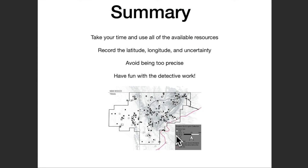To summarize, Geolocate is a great tool for turning words into georeferenced points, but it will be most effective if we take our time and use all the available resources. Remember to record not only the latitude and longitude, but also the uncertainty radius. Do try to avoid being too precise, as we would not want to introduce errors in our data analysis. Have fun with the detective work of georeferencing, and soon you'll be able to make precise looking maps of natural history observations.